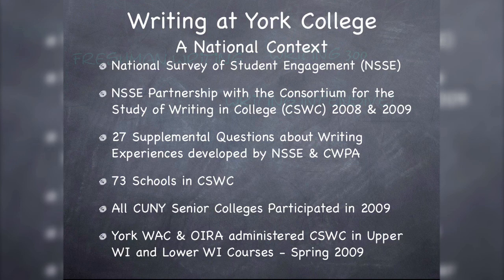While they started with perhaps more than 100 things they wanted to ask about writing, they winnowed those questions down to 27 questions about students' writing experiences. Basically, when you join the NSSE, you also have the option to join a consortium — for example, Catholic or religious universities might have a consortium; this is a consortium for schools interested in digging more deeply into writing on college campuses. 73 schools were in the consortium recently, and in spring 2009, all of CUNY's senior colleges participated and asked these 27 questions.